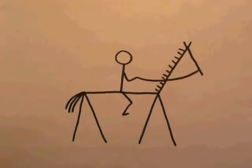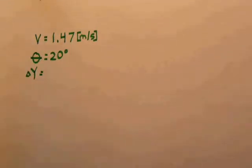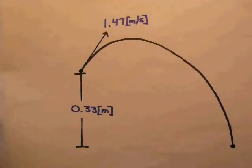For the problem, all measurements are assumed based off the video and are measured from the horse's shoulder. The initial velocity of the horse is 1.47 meters per second at an angle of 20 degrees above the horizontal. The vertical displacement is negative 0.33 meters. We will define the coordinate system as up and to the right as being positive.